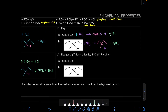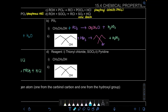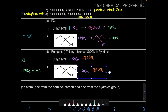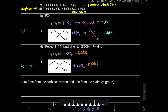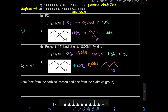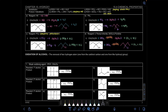Last but not least is thionyl chloride, SOCl₂, with pyridine as the catalyst written above the arrow. We substitute OH with Cl to give the chloroalkane — same product as the others. The byproduct here is sulfur dioxide (SO₂) plus HCl. So all four reagents — HX, PX₃, PCl₅, and SOCl₂ — perform substitution of OH with a halide, differing only in their byproducts. That concludes the reactions of alcohol.